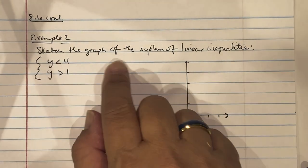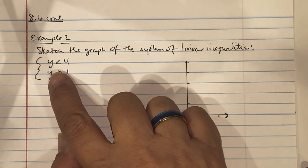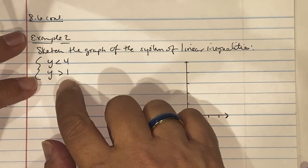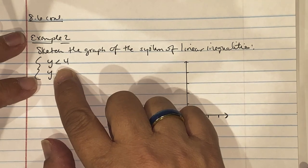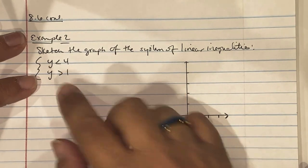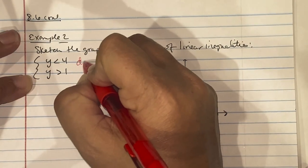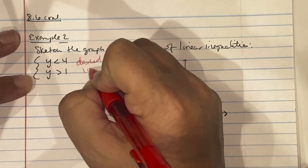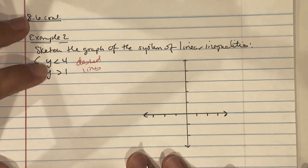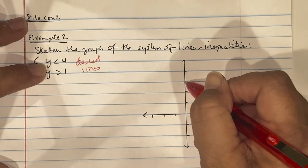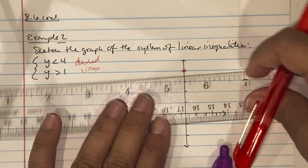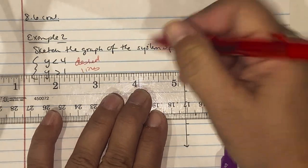Example two asks us to sketch the graph of the system: y is less than 4 and y is greater than 1. The first thing to notice is that both use strict inequalities with no equal sign, meaning the values are not included and we'll be using dashed lines. For y less than 4, go to positive 4 on the y-axis and sketch a dashed horizontal line.